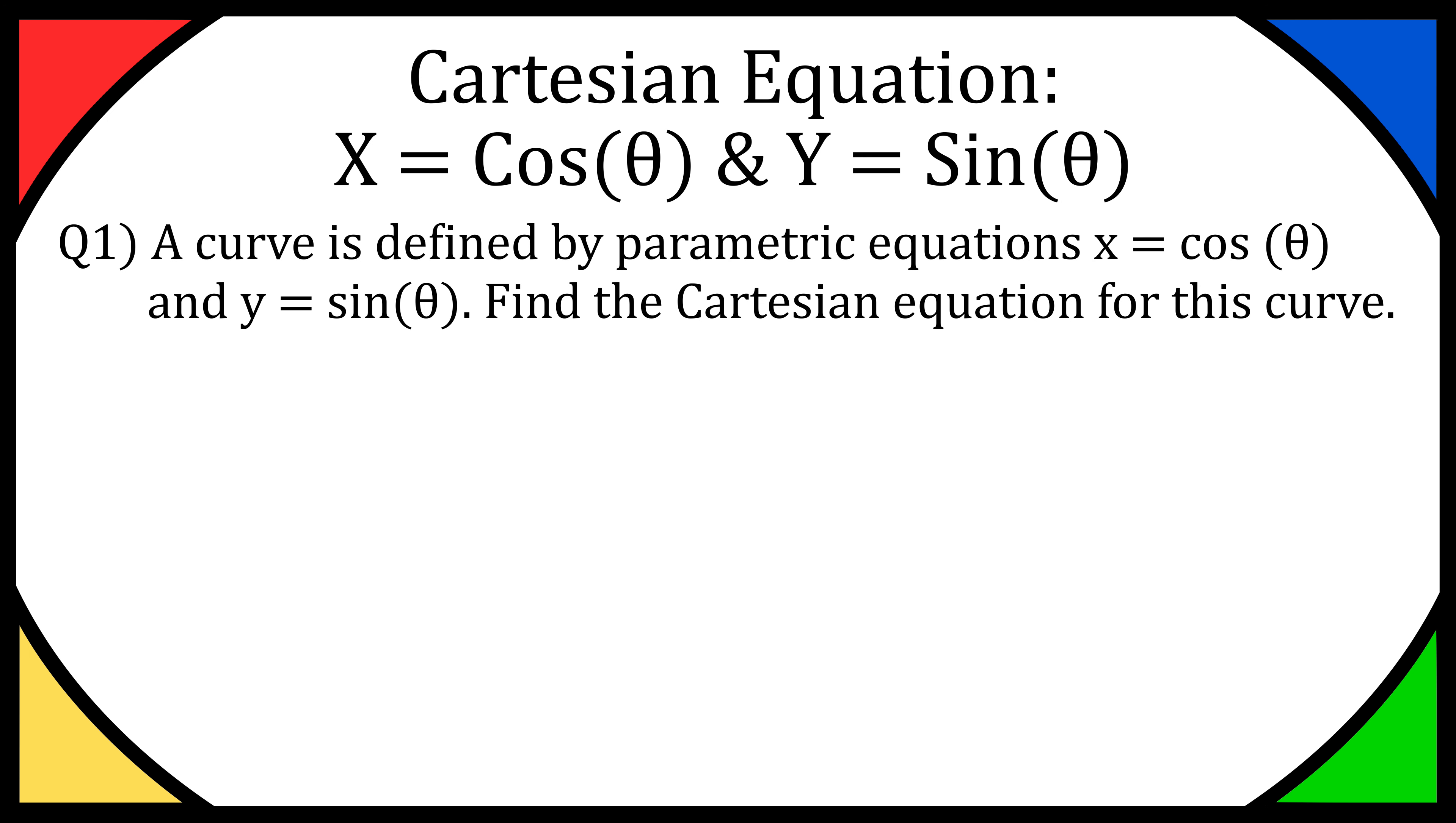It's a parametric equation because we have three variables: x, y, and theta. It asks us to find the Cartesian equation for this curve, which basically means can we get it in the form of just x and y, using the combination of x and y to get rid of that third variable, theta.